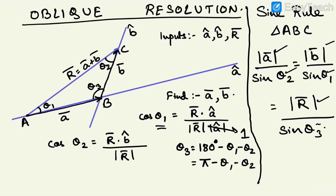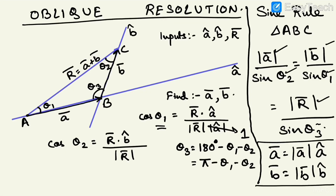This way of finding the two components of a vector is called oblique resolution — the more general method of resolving a vector into two components. You find the magnitude from the sine rule equation, then multiply by the given unit vector: A vector equals modulus of A times â-cap, and B vector equals modulus of B times b̂-cap. Adding these two gives back R vector.